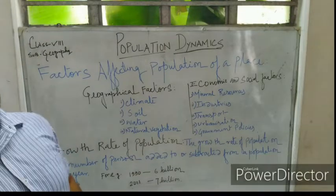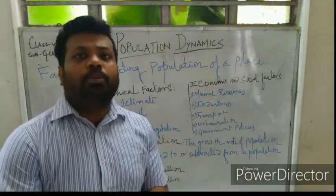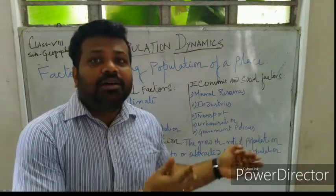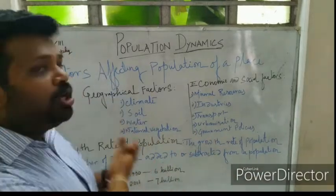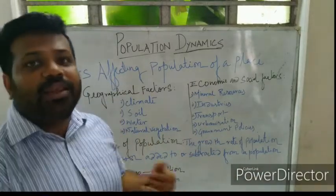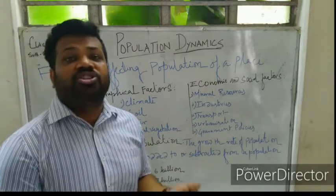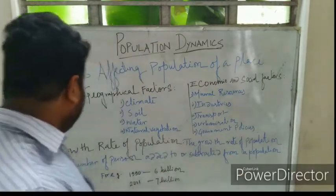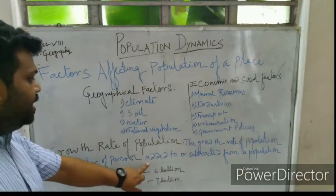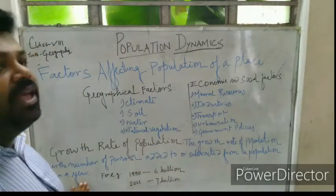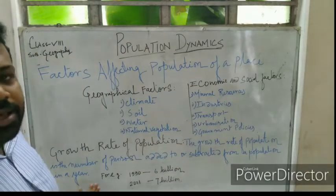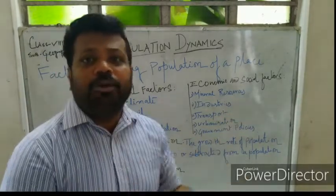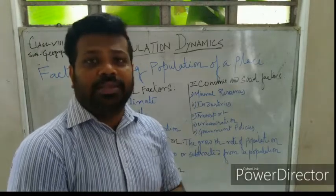Now I have written about the growth rate of population. Population can be decreasing or increasing, and the growth rate of population tells us which way it is going. For example, if this year the population is 100 billion and next year it is 200 billion, that means it is increasing.